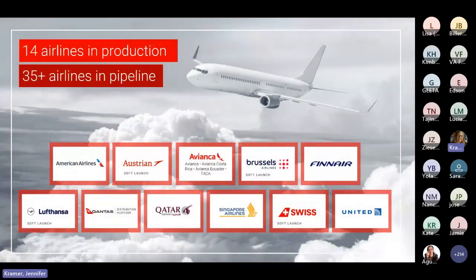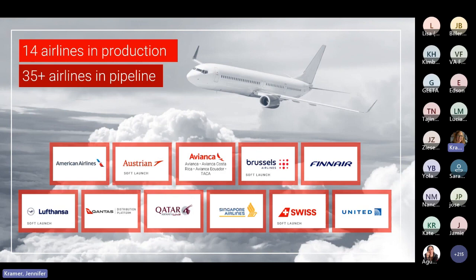Today Sabre has access to 14 airlines with NDC content. We launched American Airlines NDC content on April 3rd, followed a week later on April 10th with United Airlines. Prior to April, we launched the Avianca Group carriers, Finnair, Qantas Airlines, Qatar, and Singapore Airlines. And on May 1st, we started a soft launch for the Lufthansa Group carriers, including Austrian, Brussels, Lufthansa, and Swiss Airlines.